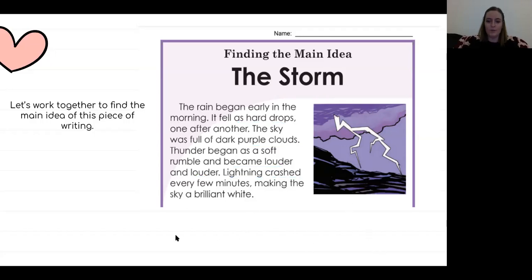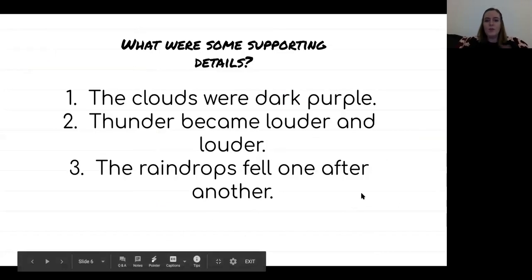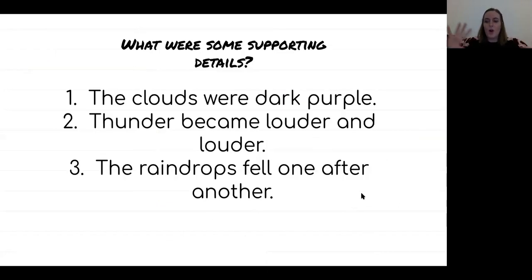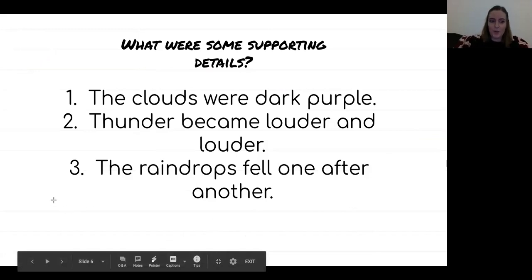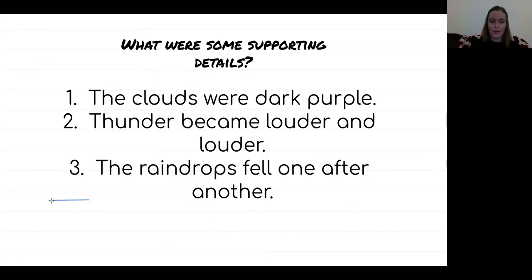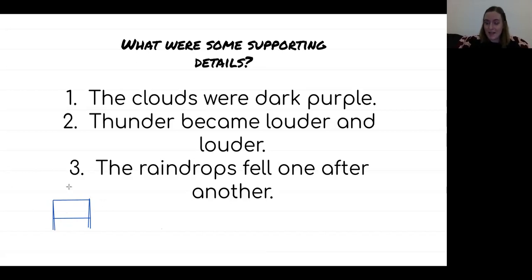So some supporting details there. Supporting details are the things that help to build up the main idea — they support it. One way that you can think about this is a table. The main idea is the top part of the table, and the supporting details are like the legs of the table. Each leg needs to be there — if one came off, the table would be unstable and fall over. The supporting details don't tell us the main idea, but they tell us about the main idea. They're extra facts. They help to prove the point.